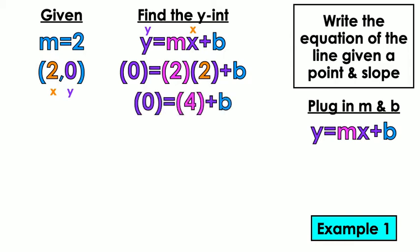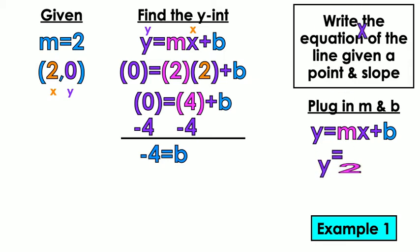First, multiply 2 times 2, which is 4. And then we're going to subtract. Negative 4 equals B. So now I plug them into the equation. Y equals 2X minus 4. Final answer.